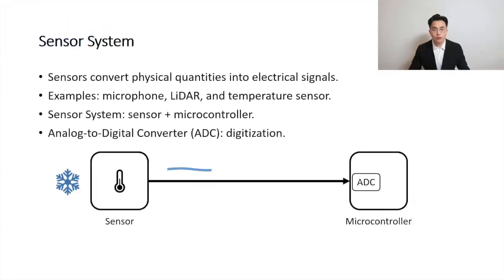Let's have a look at what a sensor system is. A sensor is an interface between the physical world and an electronic circuit. It is a device that can convert physical quantities such as sound and temperature into electrical signals. For example, in our smartphones, a microphone is a sensor that collects audio signals such as voice commands. Sensors can also be found in critical applications such as automobiles and nuclear plants. For example, a lidar sensor helps the automobile to see the surroundings, and a temperature sensor can monitor the temperature of a cooling system of a nuclear reactor.